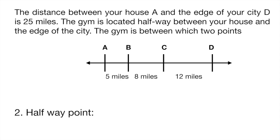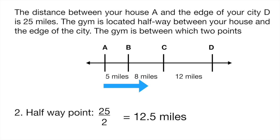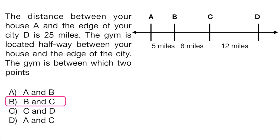The second step is to find the halfway point. If you divide 25 by 2, that gives you 12.5 miles. If you start from point A and move 12.5 miles to the right, you can see that point falls somewhere between B and C. And if you do the same thing starting from D and moving left, the 12.5-mile point is also between B and C. So your answer is letter B — the midpoint, or the gym, is located between points B and C.